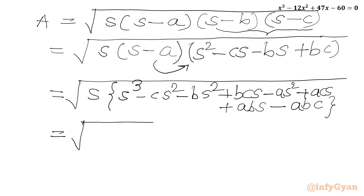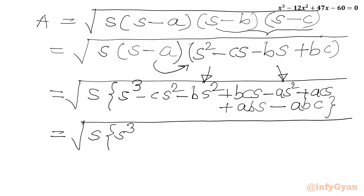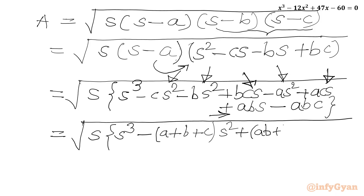So we can write Area = √(S × [S³ - (a + b + c)S² + (ab + bc + ca)S - abc]). Here we take -S² common from the three middle terms to get -(a + b + c)S², then factor out S from the next group to get (ab + bc + ca)S, and finally we have -abc.